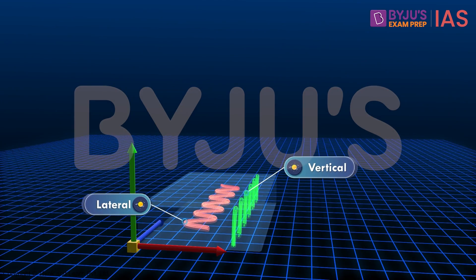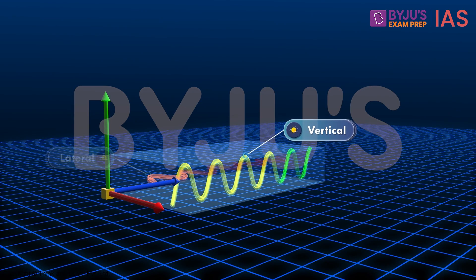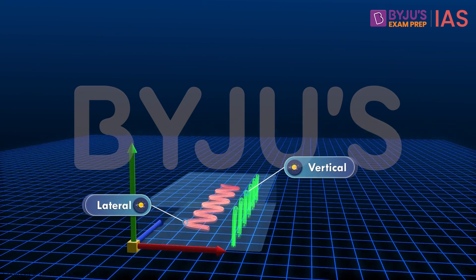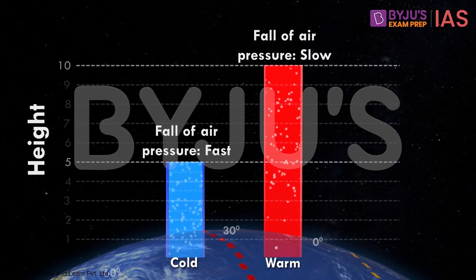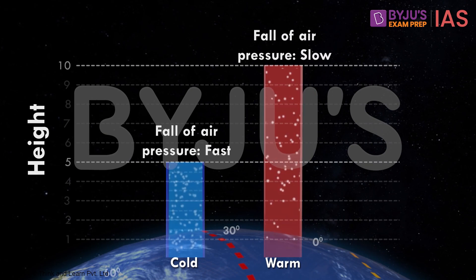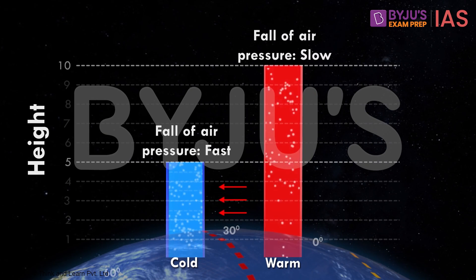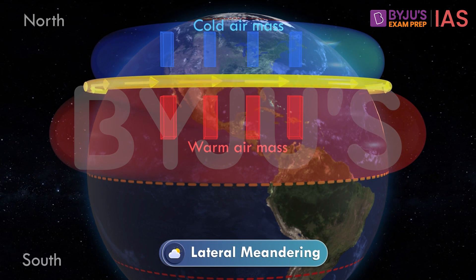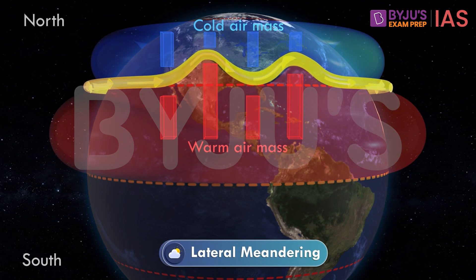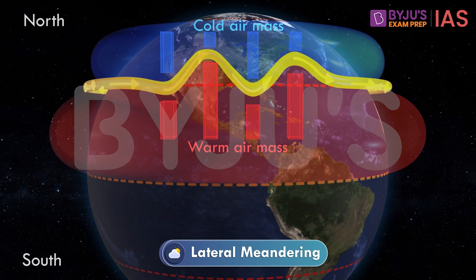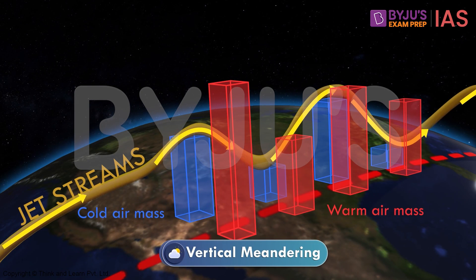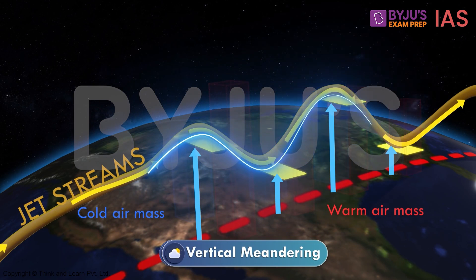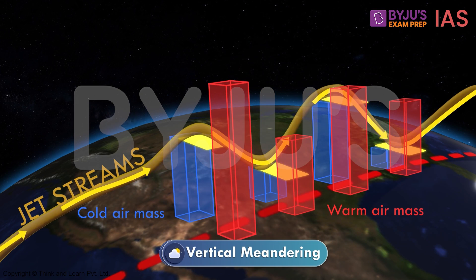What about vertical meandering? The reason behind its formation is quite similar to lateral meandering. We already know how air columns of different heights interact with each other to form jet streams. Sometimes a column of warm air moves at a much faster rate towards a column of cold air, and sometimes the opposite is observed. Again, this non-uniform interaction of air masses at various different heights leads to meandering of the waves in a vertical direction.